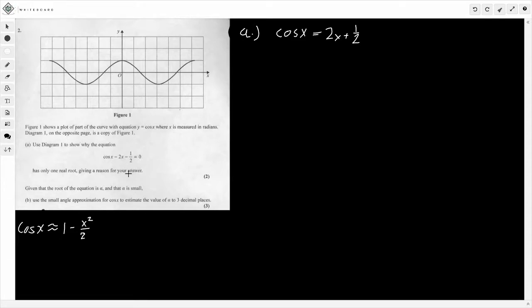We can make these equal. Cos x equals 2x plus 1 half. Well, this is cos x. So, all we need to do now is sketch 2x plus 1 half, and hopefully, what we should obtain is that it only intersects at one point. If it intersects at one point, then it has one real root.